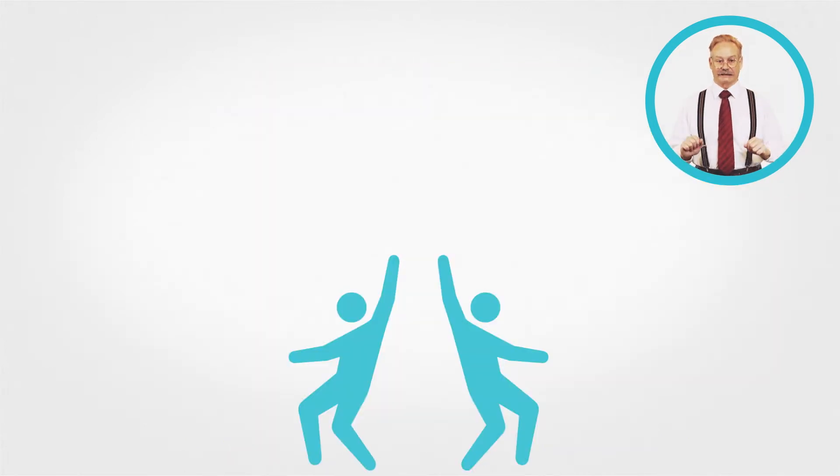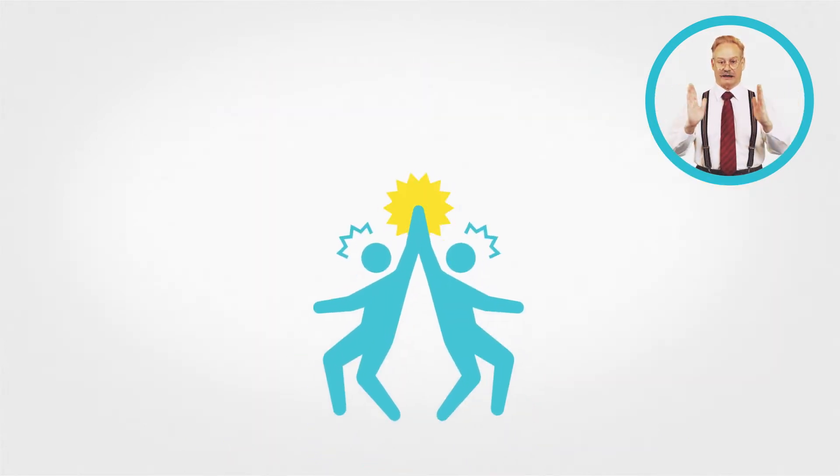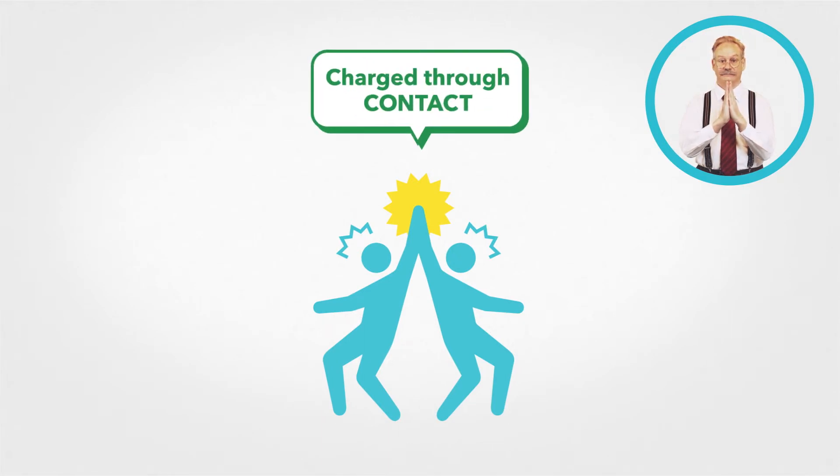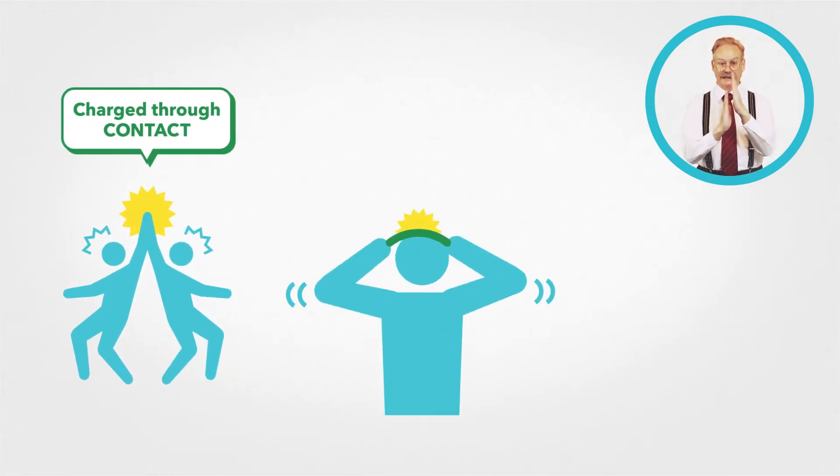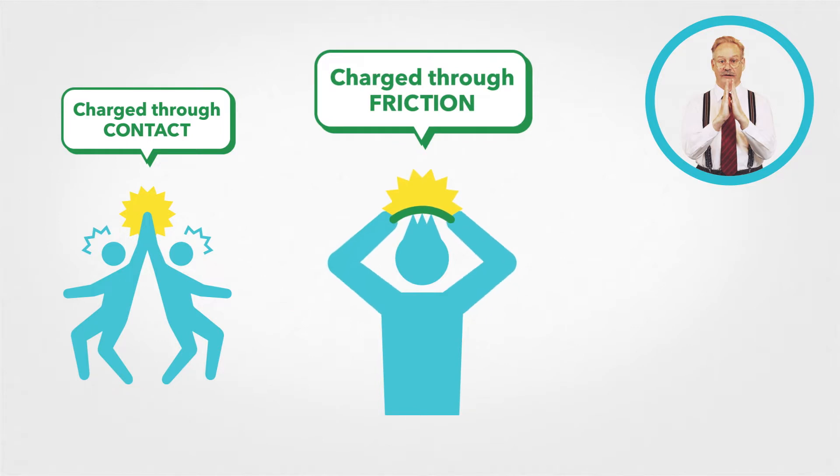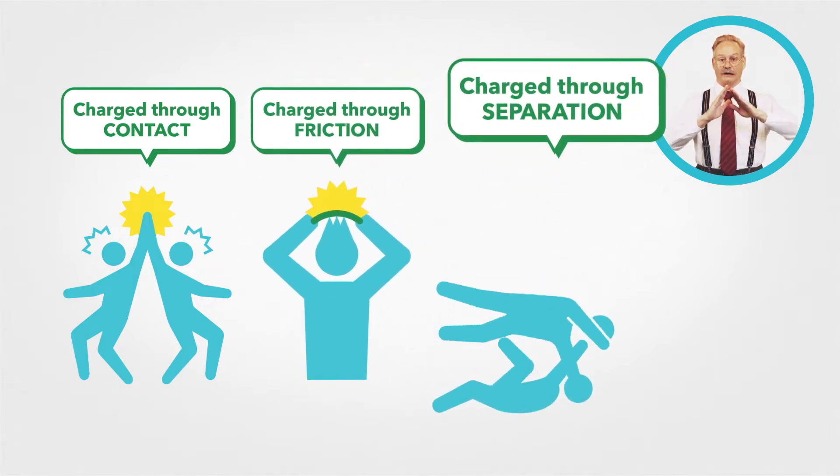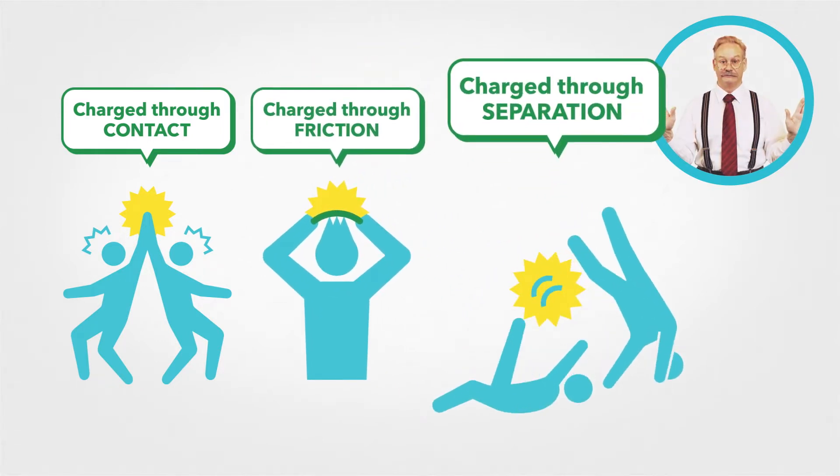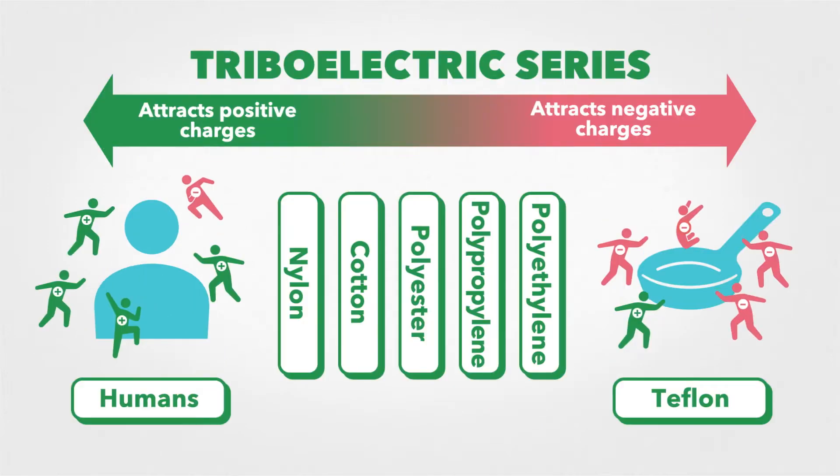Static electricity is generated when two objects come into contact, rub against each other, or are separated. Some objects attract positive charges, and some attract negative charges.